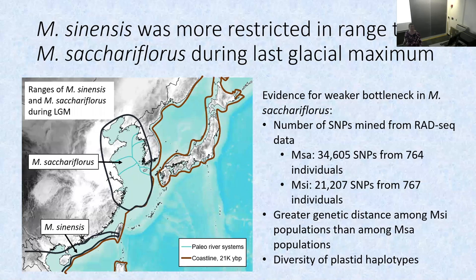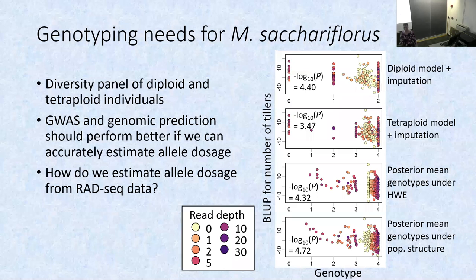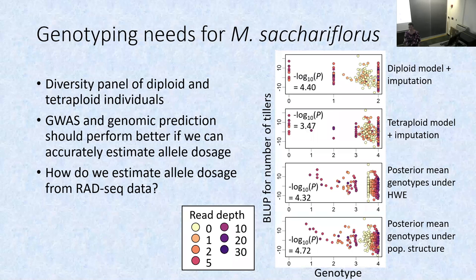We have tetraploid sacchariflorus and are doing genome-wide association for that, but we need a way to estimate allele dosage from genotyping-by-sequencing data in tetraploids. That's expected to improve GWAS over just calling it as a naive diploid model, because this is a linear regression — if you're looking for additive effects, you want to estimate allele dosage accurately.